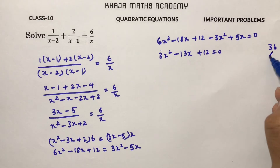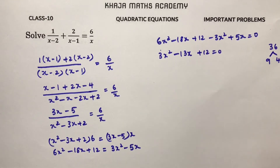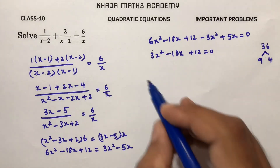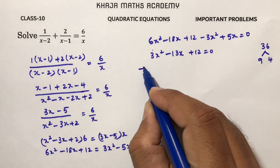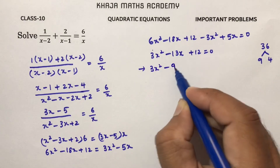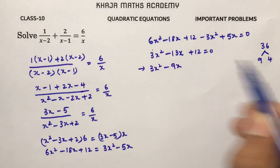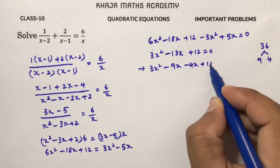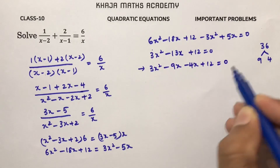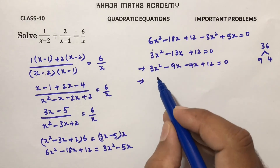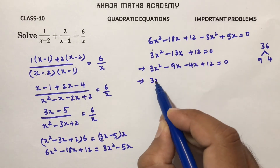Now factorize by splitting the middle term. 3 multiplied by 12 is 36, and 9 times 4 equals 36. So split minus 13x into minus 9x minus 4x: 3x squared minus 9x minus 4x plus 12 equals 0. Taking 3x common from the first two terms gives 3x(x minus 3).